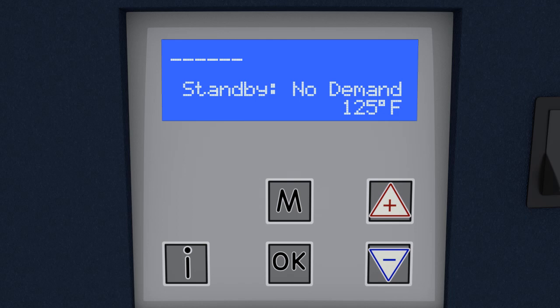To adjust the water temperature, first allow the water heater to warm up to the factory adjusted set point and wait until the burner shuts off.